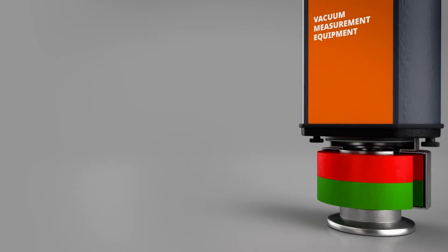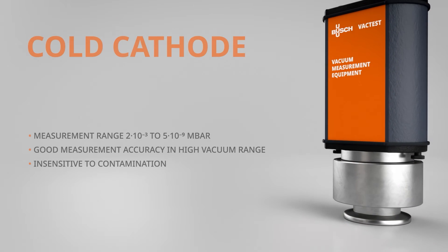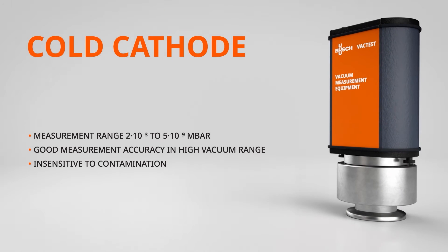A cold cathode gauge is a good choice for high and ultra-high vacuum applications. Find out more in the description below and contact your local Busch representative to find the best gauge for your vacuum process.